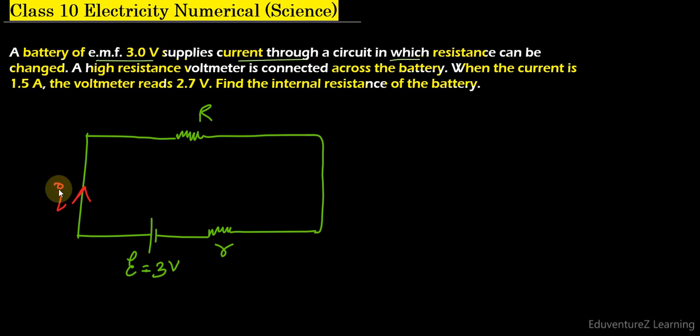A high resistance voltmeter is connected across the battery. So we have also connected a voltmeter which will read the potential difference. From here to here we are connecting a voltmeter, and voltmeter must be connected in parallel with the circuit. So this is a voltmeter.